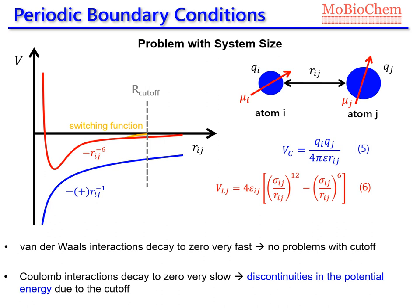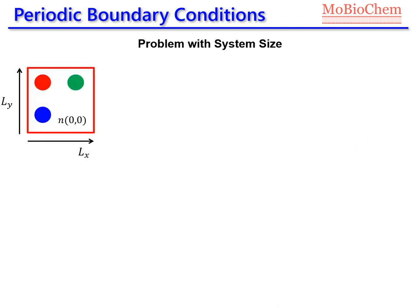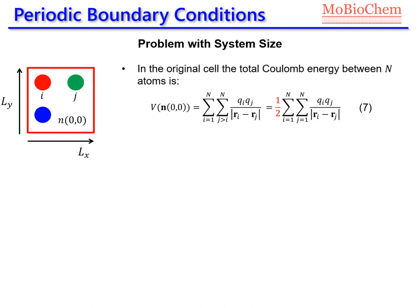We will have a discontinuity in the potential energy surface and the gradient on this discontinuity will be infinite. So we need to solve this problem. Let's analyze the situation in more detail. In the original cell, the total Coulomb energy between n atoms follows this equation.